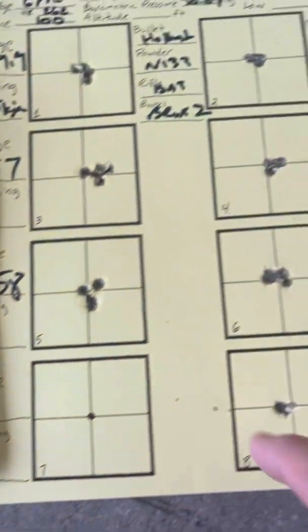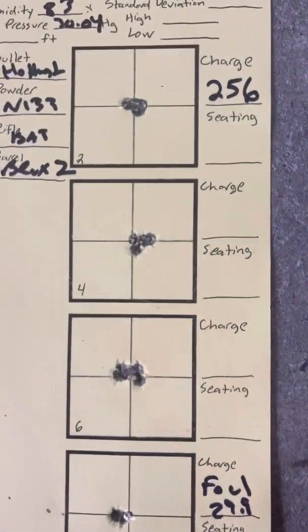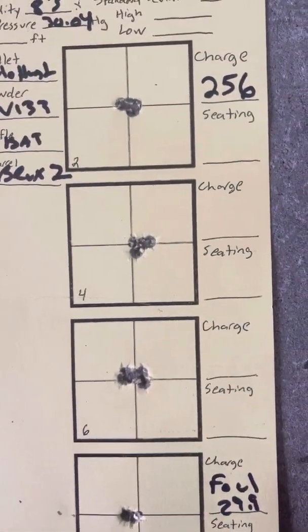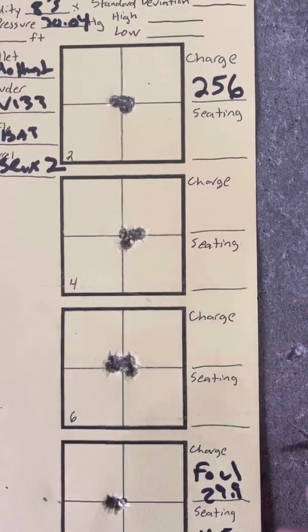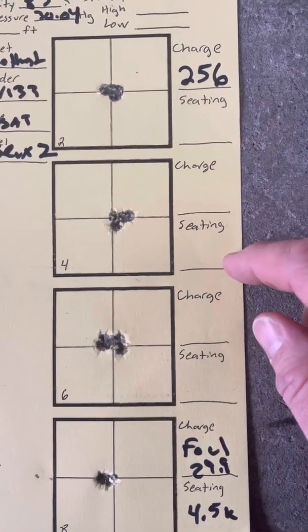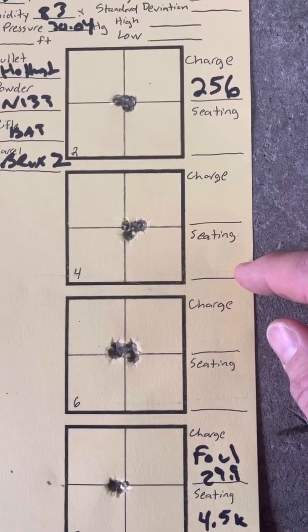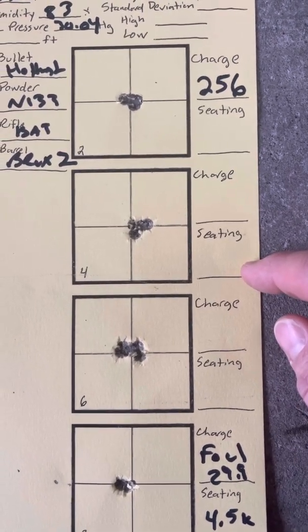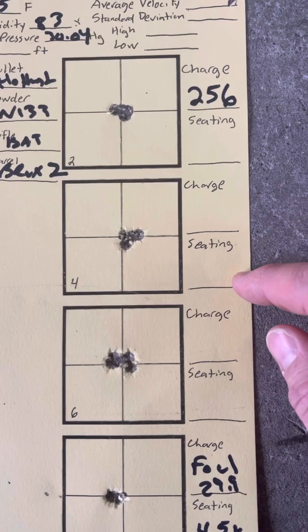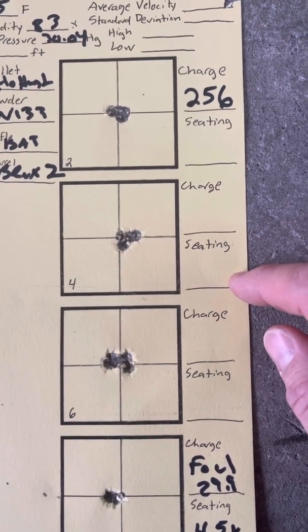But as you can see on the target, the .256 bushing wins. Very small difference between .256 and .257, but once I get to the calipers to measure this thing, I'm pretty sure the .256 will demonstrate a smaller group.